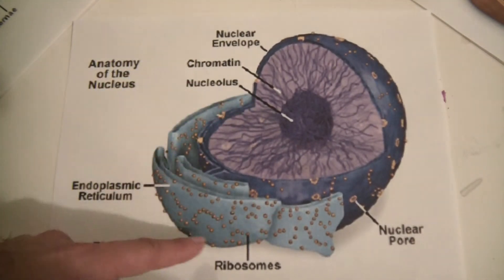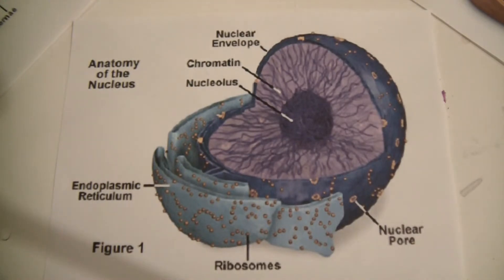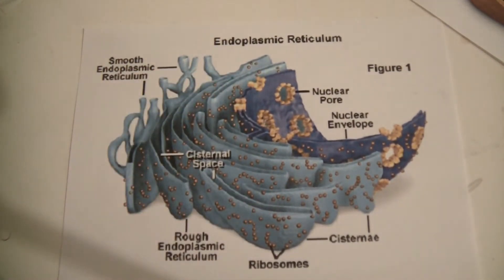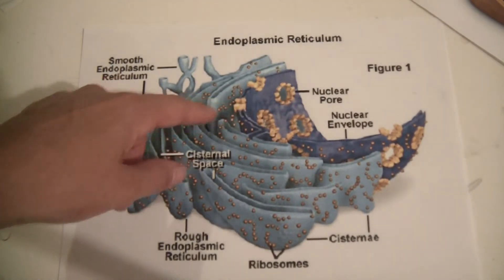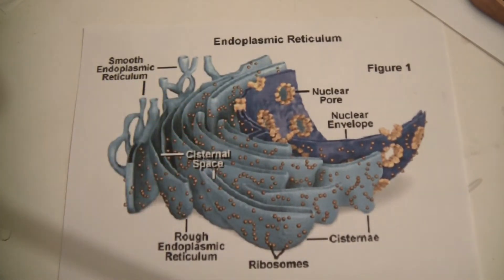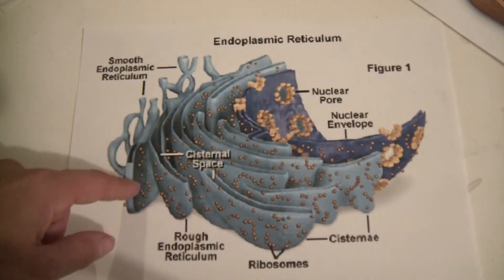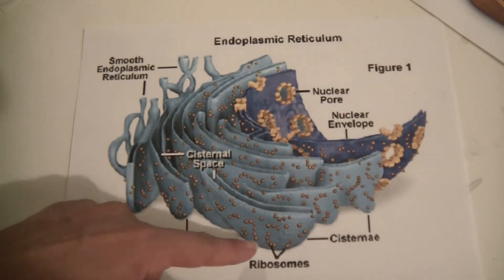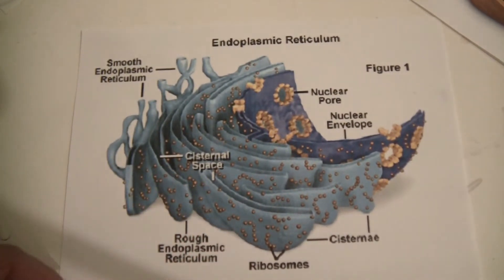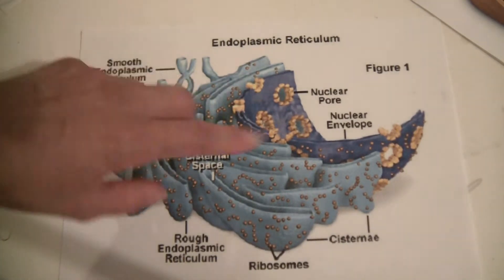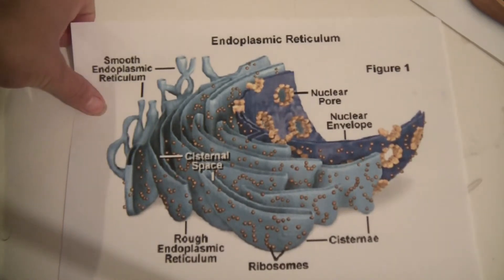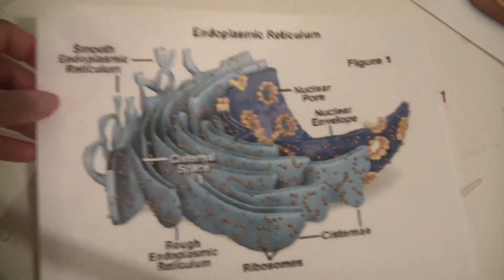You'll notice the nucleus is surrounded by an organelle called the endoplasmic reticulum. The endoplasmic reticulum is really a set of transport channels, and messages sent from the nucleus can travel through it and get transported throughout the cell. This portion is called rough ER, and it has ribosomes on its surface. The ribosomes are where protein synthesis takes place — which is integral to the function of DNA, since DNA helps direct protein synthesis.